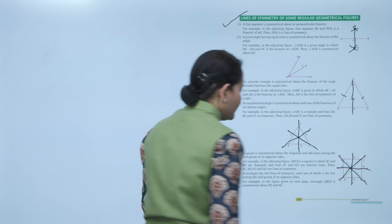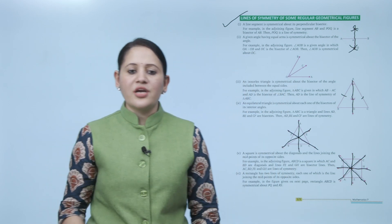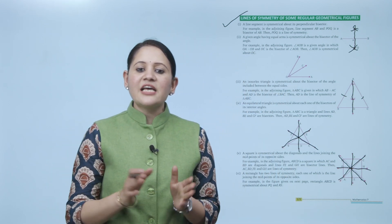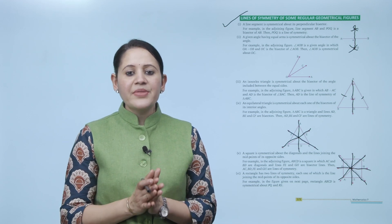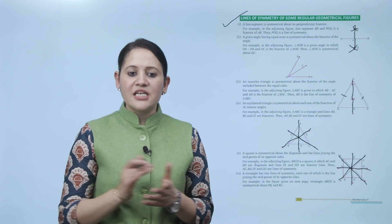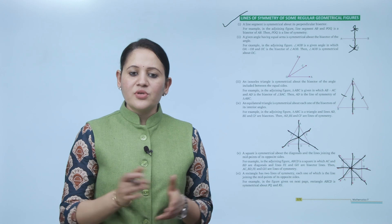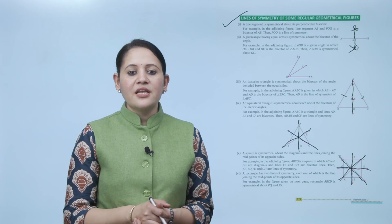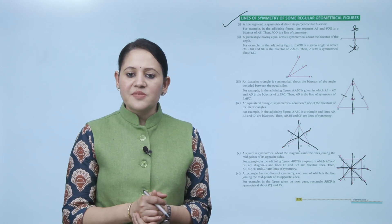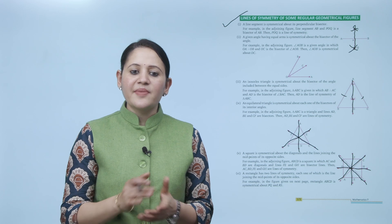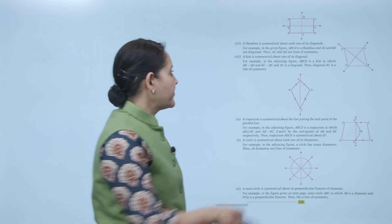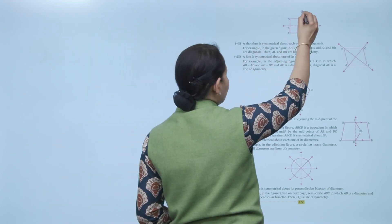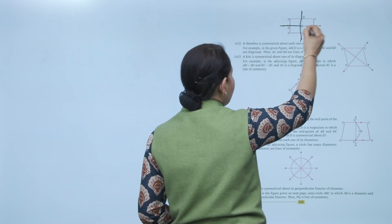A rectangle has only two lines of symmetry, because in a rectangle only opposite sides are equal. Each line of symmetry joins the midpoints of opposite sides. For example, rectangle ABCD is symmetrical about PQ and RS. So the rectangle has two lines of symmetry: PQ and RS.